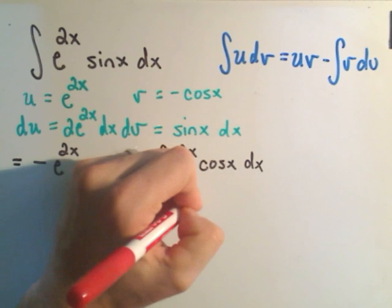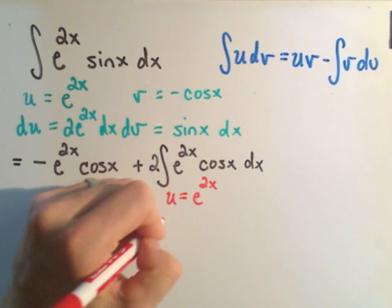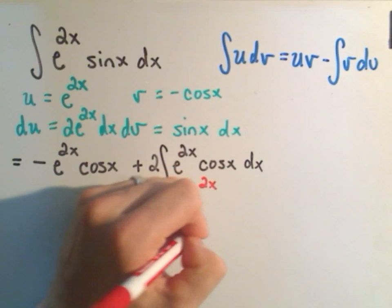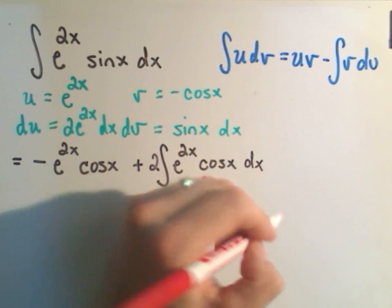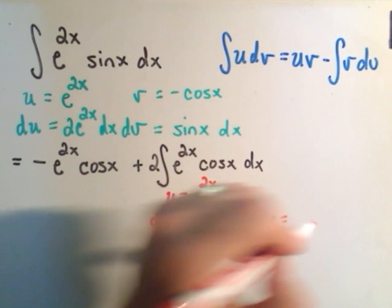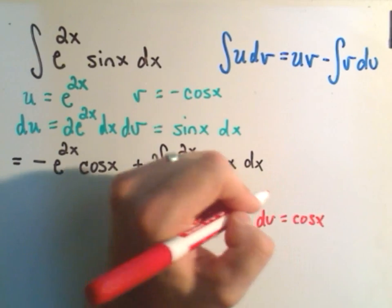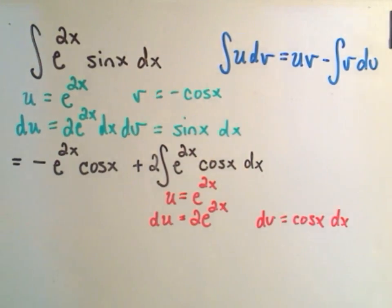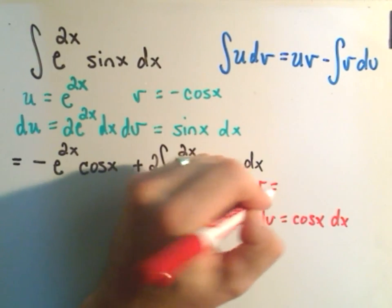So again, I'm going to pick u to be e to the 2x. Just like before, the derivative of that is going to be 2e to the 2x. We'll let dv be cosine x dx. And when I integrate that, we'll simply get sine x.